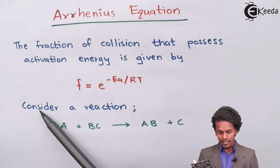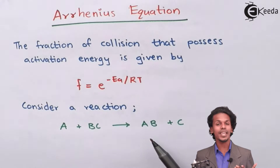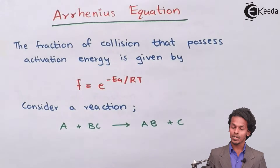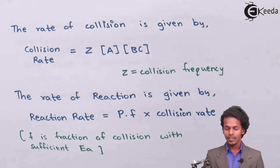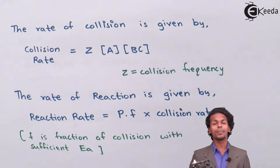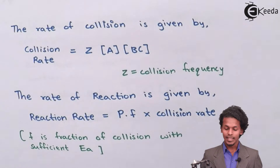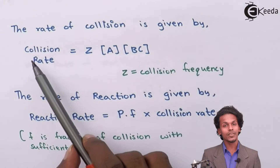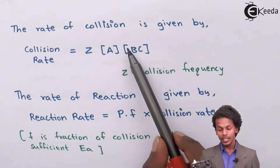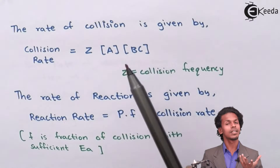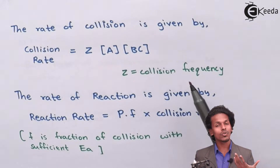Consider a reaction: A plus BC gives AB plus C as the product. If they are colliding with each other at a particular rate or speed, then the collision rate is given by the formula: Collision rate equals Z into concentration of A into concentration of BC, where Z is the collision frequency.